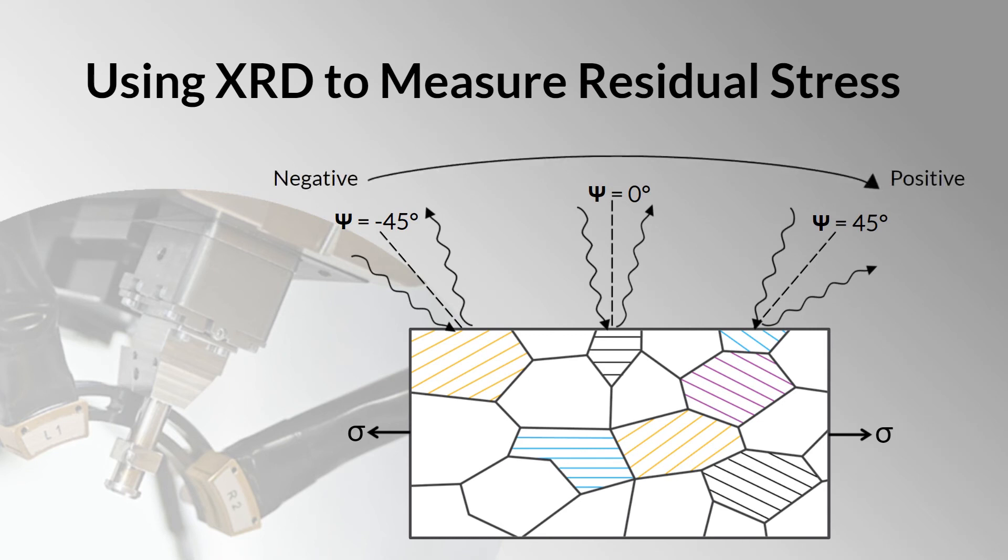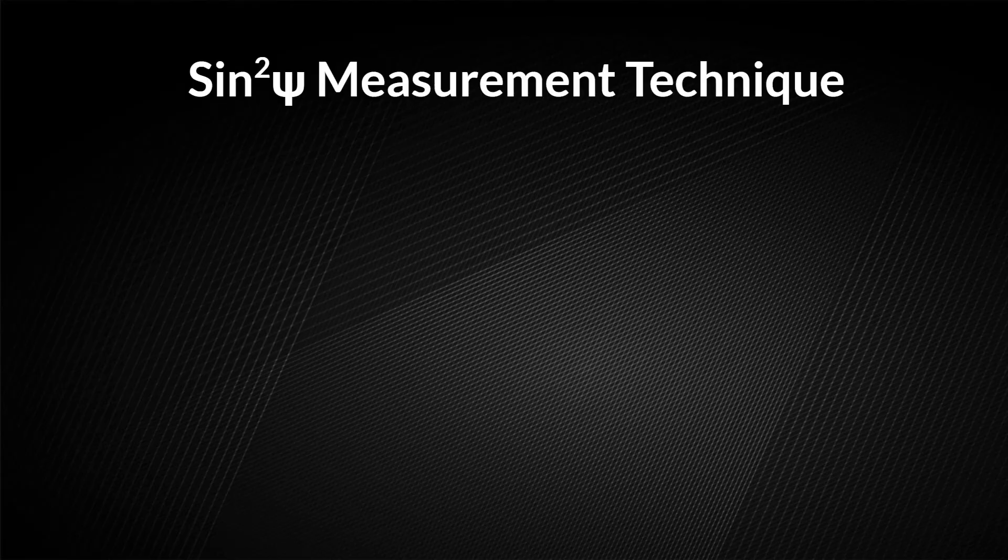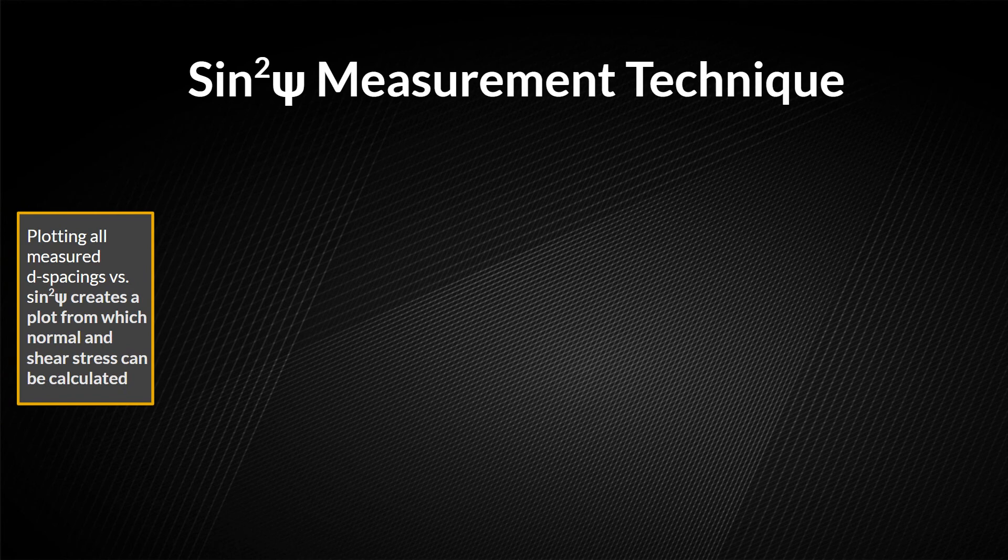Then, the Bragg angles are used to calculate the D-spacings. The measured D-spacings are plotted against the sine squared psi values.